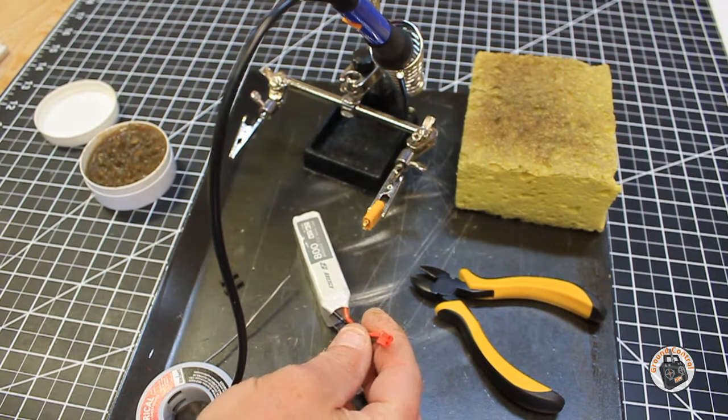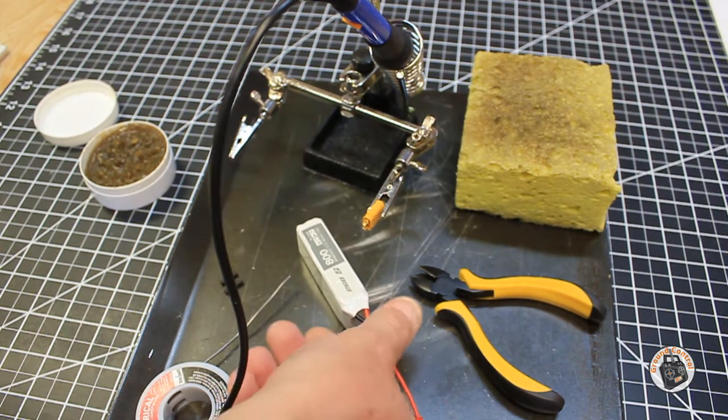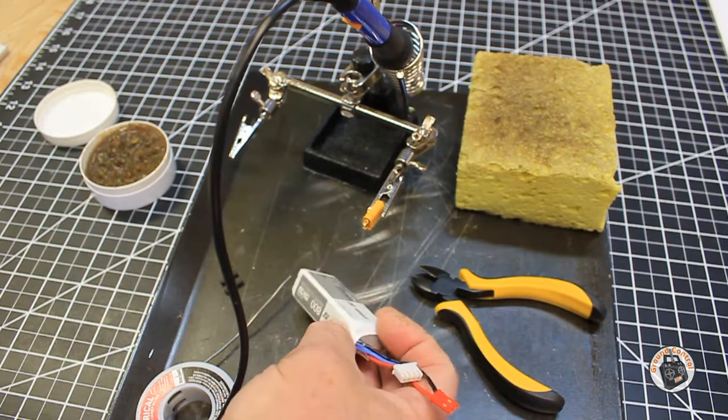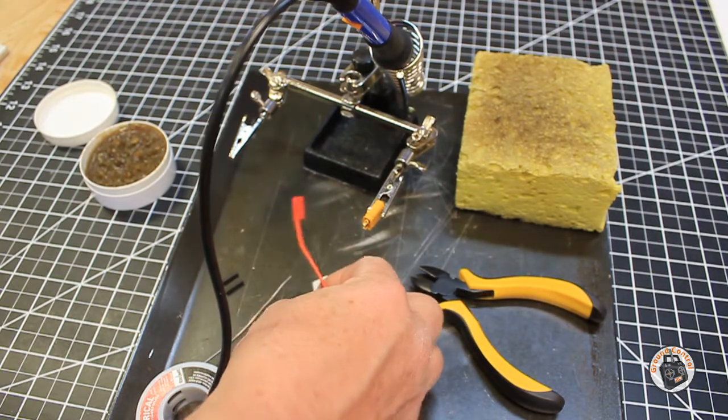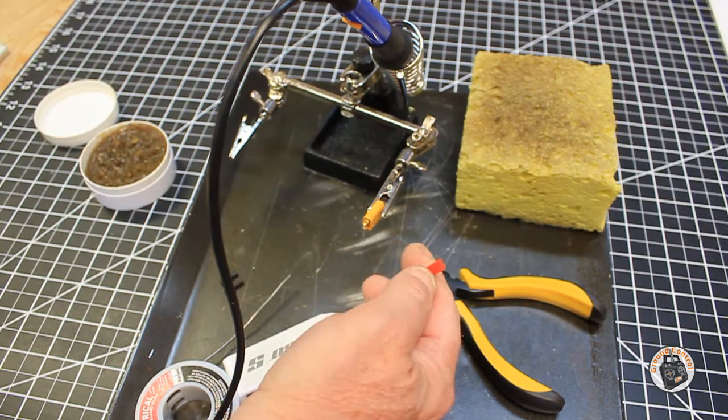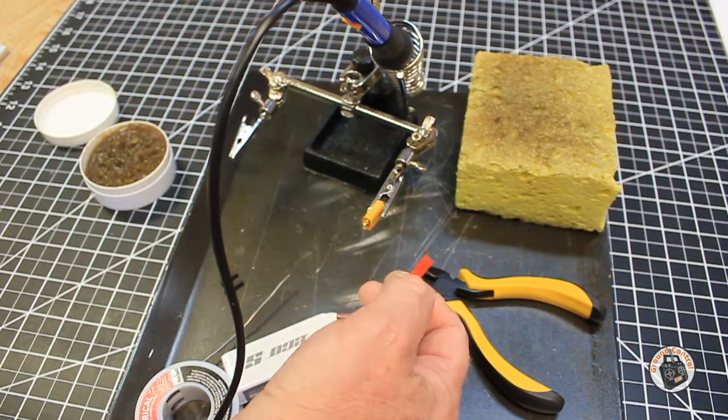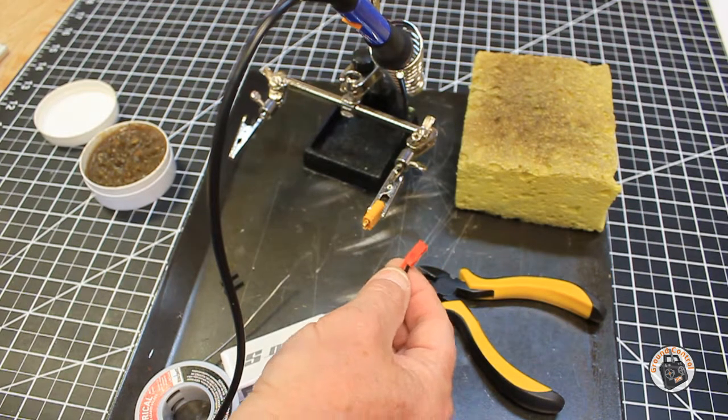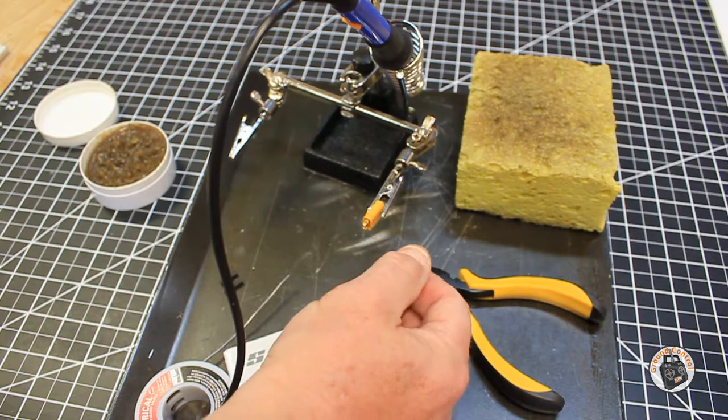This park jet is set up with an XT30 connector. Because this is an 800 milliamp-hour 25C battery and it's capable of providing 20 amps of power continuous, this is an insufficient type of connector for this battery. I do not know why manufacturers do this.